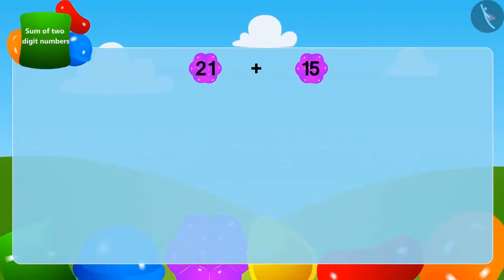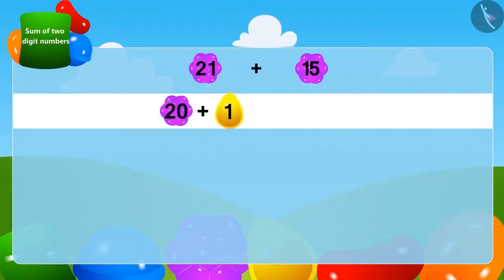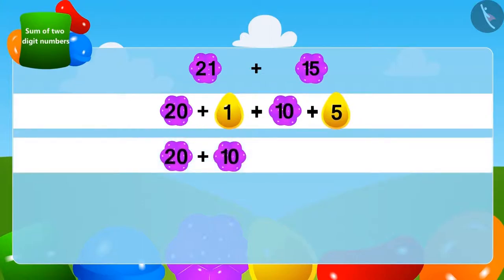We can write 21 by adding 1 and 20 like this. And in the same way, 15 can be written by adding 5 and 10. Now, we will write two-digit numbers together and one-digit numbers together like this.